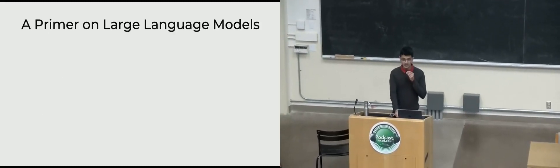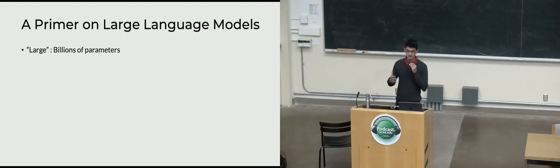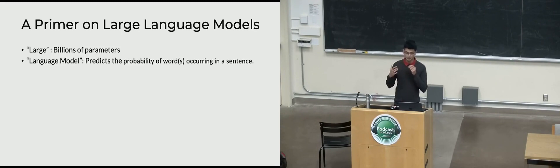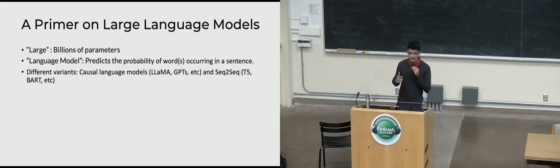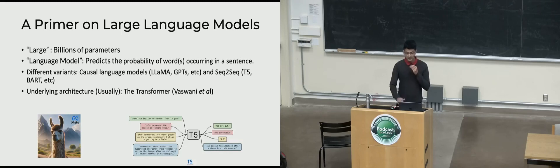A brief primer on large language models. These are large deep networks with billions of parameters — language models working towards predicting the probability of words in a sentence. You've got different variants which can affect your FLOPs. Causal language models — LLaMA, GPT — are the more popular version, but you've also got sequence-to-sequence. The underlying architecture important when thinking about memory and throughput is the transformer.